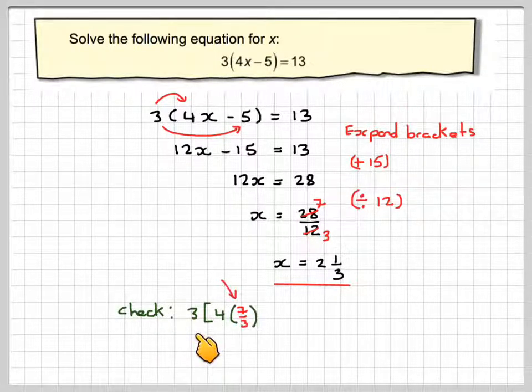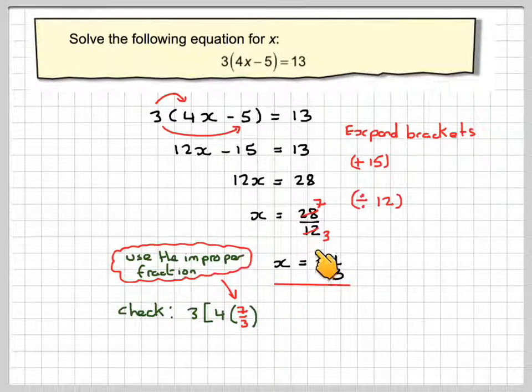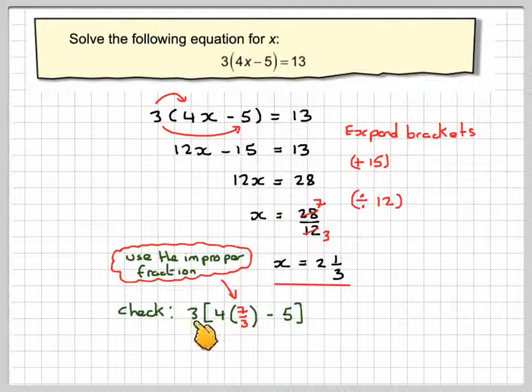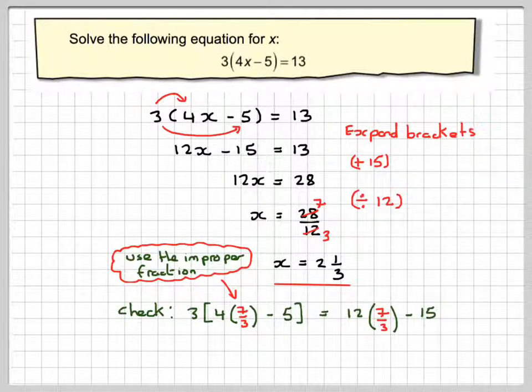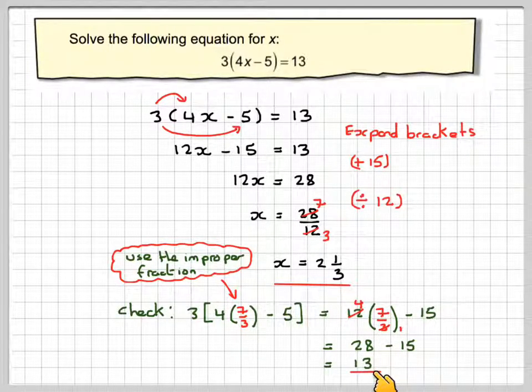Now, if we check, we're going to have 3 times 4 times, and it's better when you do the check to use the improper fraction. So it's 7 over 3 minus 5. Taking that 3 into the bracket gives me 12 times 7 over 3 minus 3 times 5, which gives me minus 15. Now, the 3 and the 12 will simplify, because 3 goes into 12 four times and therefore into 3 one time. So now we need to work out 4 times 7 minus 15. 4 times 7 is 28. Take away 15. 28 take away 15 is 13. And that's what I wanted.